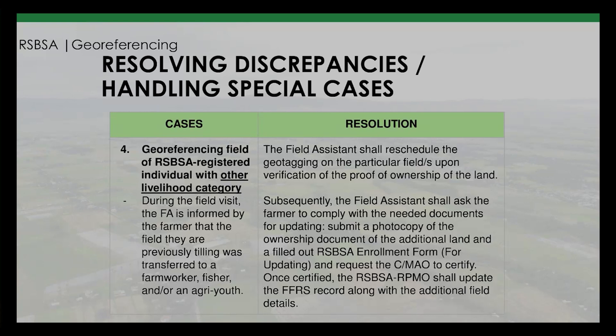Case 4 — geo-referencing fields of RSBSA registered individuals with other livelihood categories: during the field visit, the FA is informed by the farmer that the field they were previously tilling was transferred to a farm worker, fisher, and/or agri-youth. Resolution: the field assistant shall reschedule the geotagging on those particular fields upon verification of proof of ownership of the land.